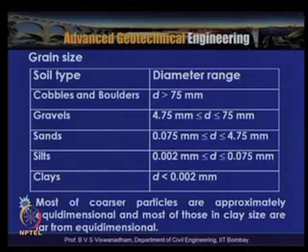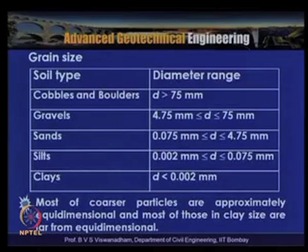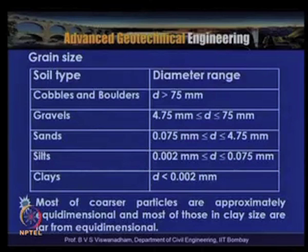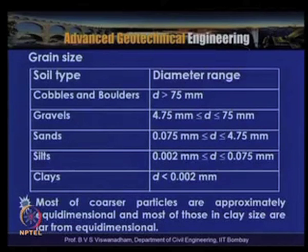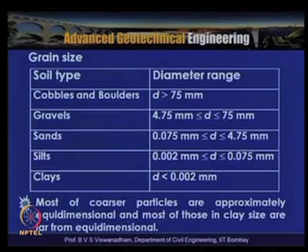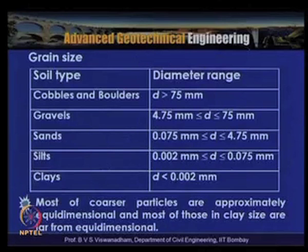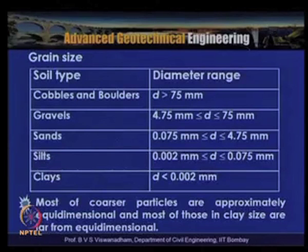Gravels have a size greater than 4.75 mm and less than 75 mm. Anything more than 19 mm is treated as cobble or boulder; between 4.75 mm and 19 mm is treated as gravel. Sand ranges from 0.075 mm to 4.75 mm; silt from 2 micron to 75 micron; and clays are fine particles with diameter less than 2 micron, as small as 0.002 mm.